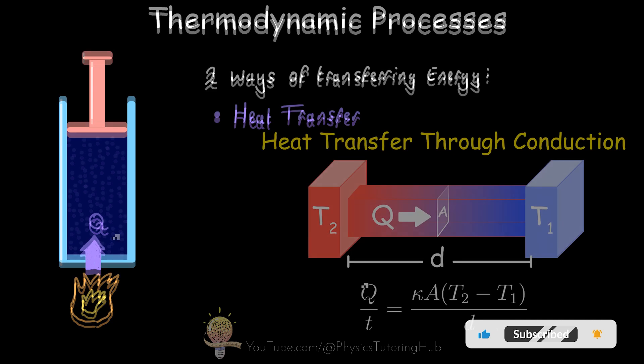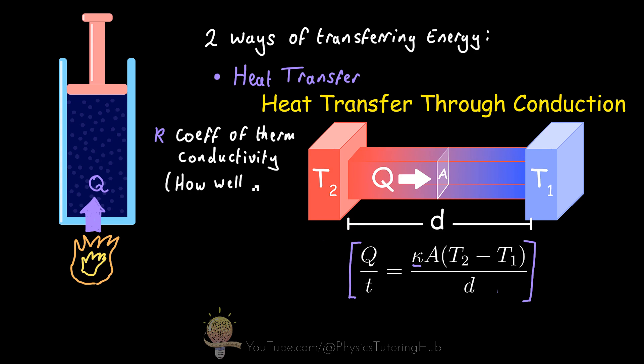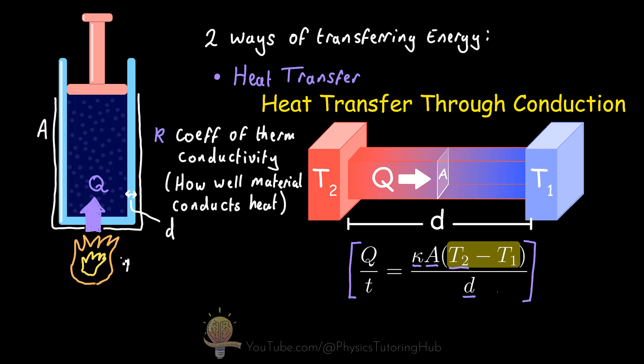And from a previous video, we discovered that the rate of heat transfer through a material can be described by this equation. And this is how much heat is transferred over time. So on the right hand side, we've got the coefficient of thermoconductivity, which is a measure of how well a particular material conducts heat. We also have the surface area of the container here, which would, for example, be the surface area of the piston chamber. D is the thickness of the walls of the chamber. And T2 minus T1 is simply the temperature difference between the surroundings and the gas within the chamber.